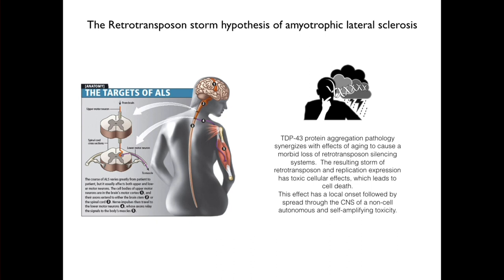Let me state what we call the retrotransposon storm hypothesis. We believe that TDP-43 protein aggregation pathology synergizes with the normal effects of age to cause a morbid loss of normal systems that silence retrotransposons in neurons and/or glial cells, resulting in a toxic wave or storm of retrotransposon expression and replication. This may have myriad toxic cellular effects leading to cell death, and further this effect has a local onset followed by spread through the CNS via a non-cell-autonomous and self-amplifying toxicity.